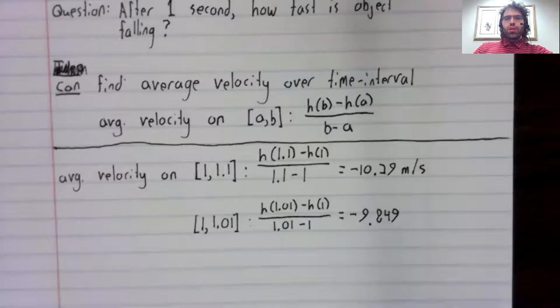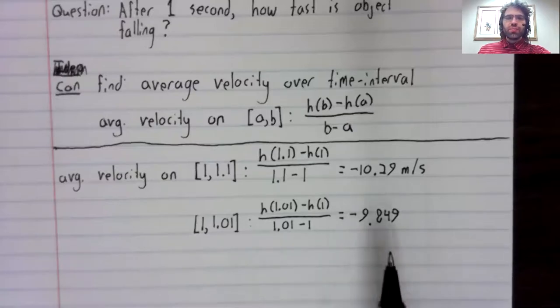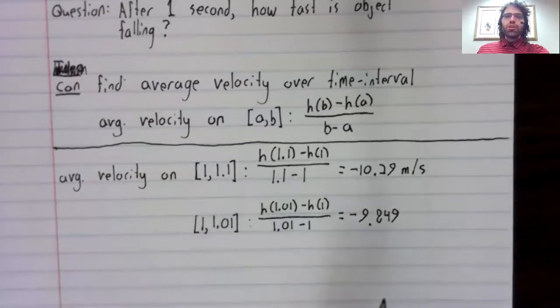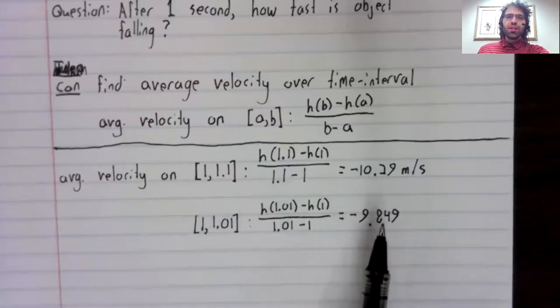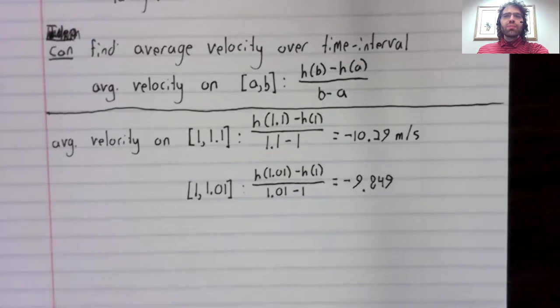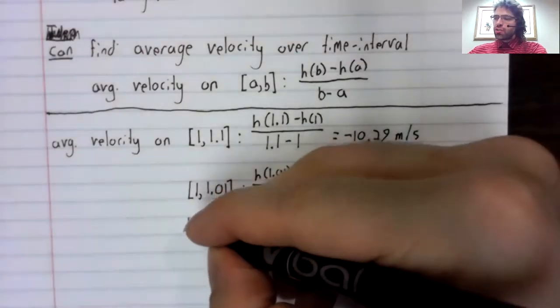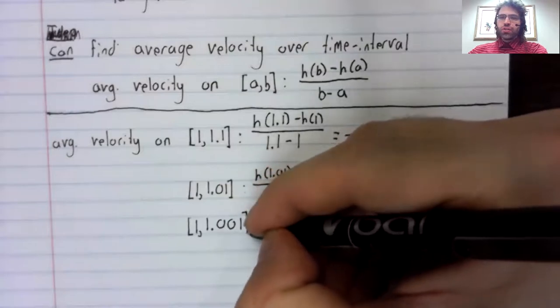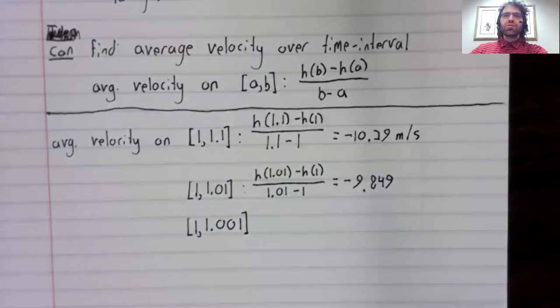If the falling object only has 0.01 seconds to accelerate, the average velocity becomes this. And now it's hopefully kind of clear where we can go from this. If we buy the idea that the smaller the interval, the closer this average velocity comes to being the exact velocity, then we can get better and better approximations by making the interval smaller and smaller.